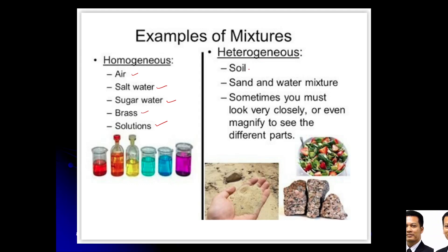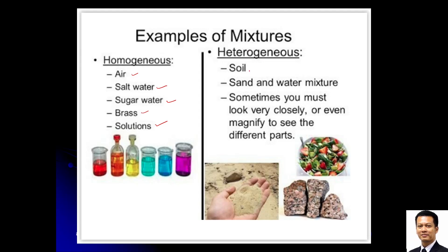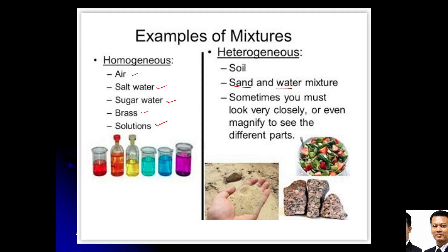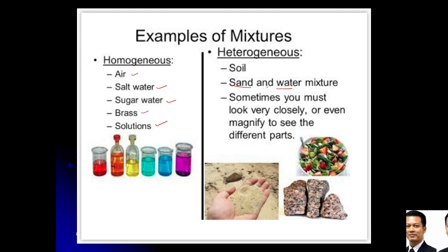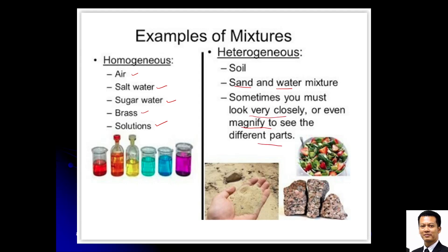Heterogeneous examples include soil — sometimes you can see the differences, or sometimes you need a microscope. Sand and water is also heterogeneous — you can still see the boundary between sand particles and water; it does not mix uniformly. Sometimes you must look very closely or even magnify to see the different parts, but you can still see the boundary.